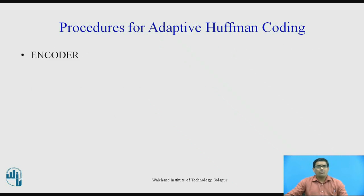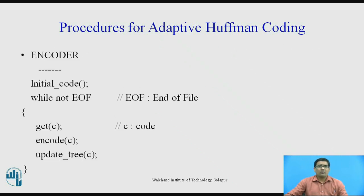Procedure for adaptive Huffman coding — for the encoder: first, initialization of the code with the assumption of some data. After that, we use a while loop with the condition 'not EOF' (end of file). Then we get C, where C means the code. After that we encode the code, and with the help of this encode procedure we update the tree using that code.